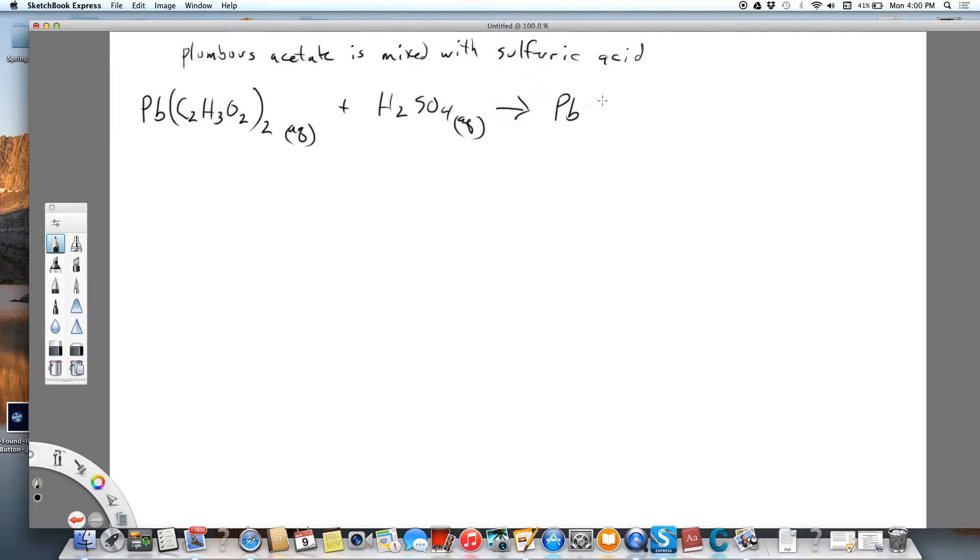So the lead 2 is going to go with the sulfate, and if we look at the solubility rules, we know that is a solid. And then we know we're going to form, the H is going to go with the acetate, and acetate is minus 1. So I'm going to have to put only 1 hydrogen at a time with the acetate, so I'll need 2 of those.